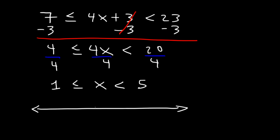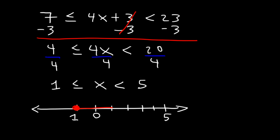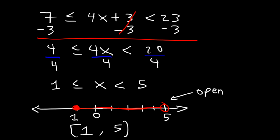Let's plot this on a number line. At 1, since x is greater than or equal to 1, it includes 1, so we need a closed circle and shade towards the right. At 5, x is less than 5 but not equal to it, so we use an open circle and shade towards the left. We can clearly see x is between 1 and 5. In interval notation, we start with a bracket at 1 since it's included, and use a parenthesis at 5 since we have an open circle. The answer is bracket 1 to 5 parenthesis.